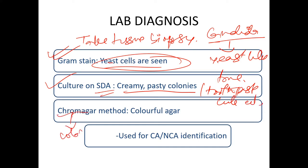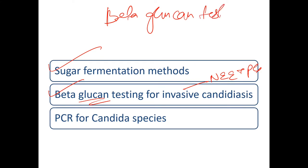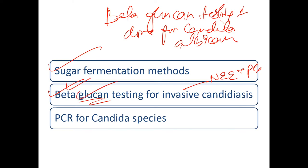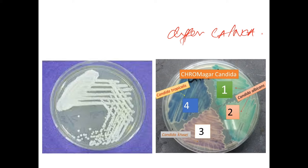Chrome agar uses color to differentiate Candida albicans from non-Candida albicans species. Sugar fermentation methods and beta-glucan testing are also done for Candida albicans — beta-glucan testing is an important exam topic. PCR is also performed. On chrome agar, Candida albicans appears green, Candida tropicalis and Candida krusei show defined distinct colors.